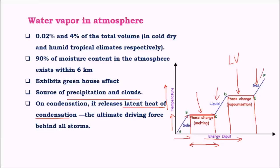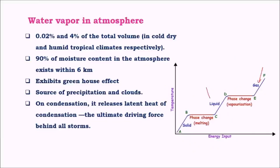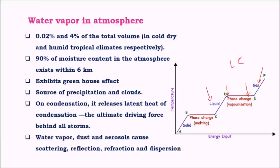When the reverse process happens — that is, when gas condenses into a liquid — the same amount of energy is released into the atmosphere. This energy is called latent heat of condensation, and it is the driving force behind all storms and other cyclonic features. Water vapour along with dust aerosols gives rise to various phenomena like scattering, reflection, refraction, and dispersion, which we will see in detail when dealing with topics related to general science.